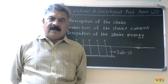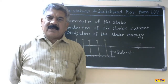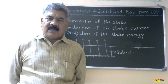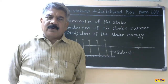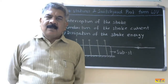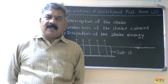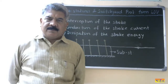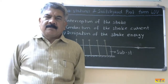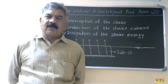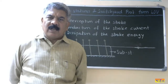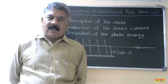Therefore, protection against lightning overvoltages is necessary. This protection is divided into three categories: number one, protection of substations and switchyards against direct lightning overvoltages; number two, protection of transmission lines against direct lightning overvoltages; and number three, protection of power system equipment.